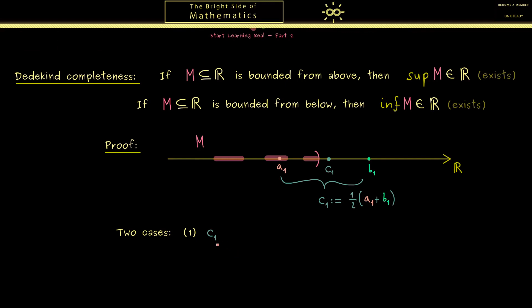Ok you might have already seen we can have two cases for c_1. Either it's still an upper bound like b_1 or not.